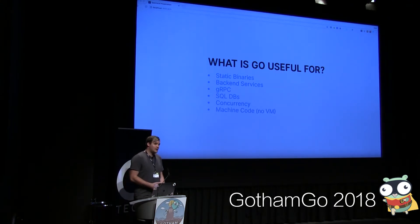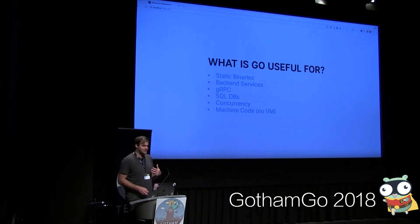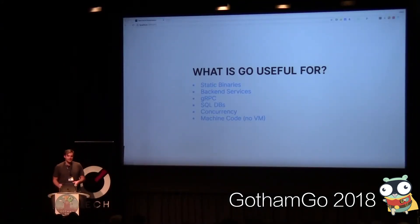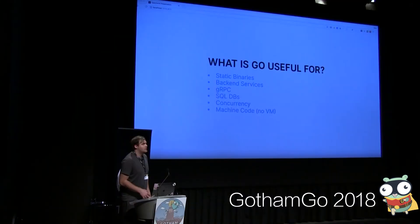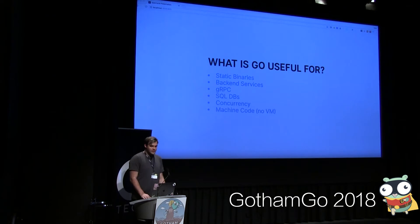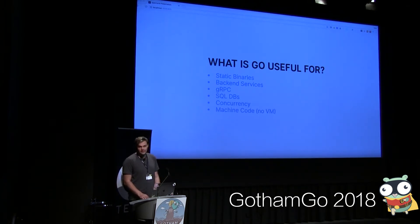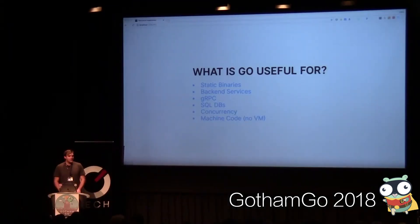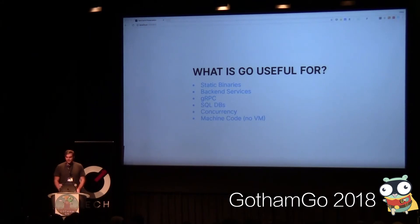So if it's a faster JavaScript with fewer keywords, what can we use it for? It's general purpose, so we can compile it into static binaries. This is really interesting for JavaScript engineers because we're used to having to ship around this giant swath of Node modules. If I want to deploy something to a server for Node, I have to ship a lot of files. If I want to deploy something with Go, I can ship a single binary. Go also supports protocol buffers and gRPC, SQL databases, and concurrency with goroutines. It compiles straight to machine code instead of running in VMs like JavaScript, so you get extra performance without the additional layer of abstraction.